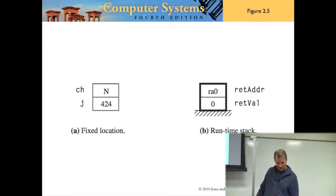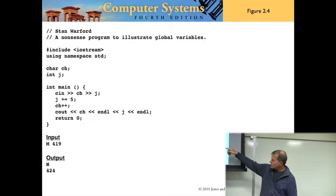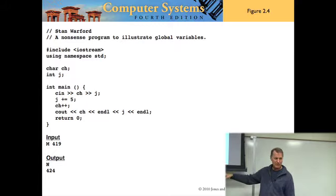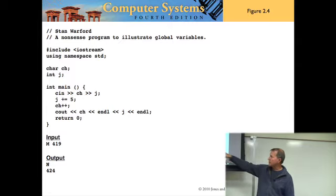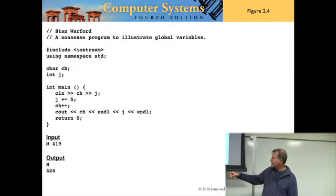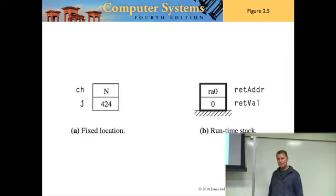The values happen as the program executes. If somebody inputs the letter M for CH and 419 for J, it adds 5 to J and 1 to M, making it N. When it quits, it pops that stuff back off the stack.